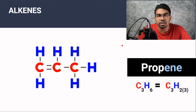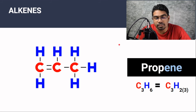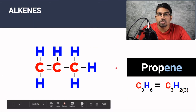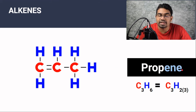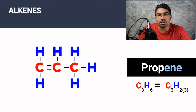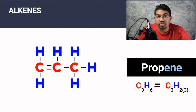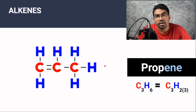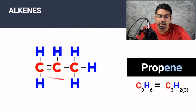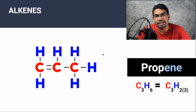When determining the structural formula of an alkane or alkene, first look at the name. If it ends with -ane it is an alkane; if it ends with -ene it is an alkene and has a carbon-carbon double bond. Then look at the prefix to determine the number of carbons. Once you have the number of carbons, use the general formula to find the molecular formula. Then draw out all the carbon atoms, add a double bond if it's an alkene, and finally fill in all the hydrogen atoms.